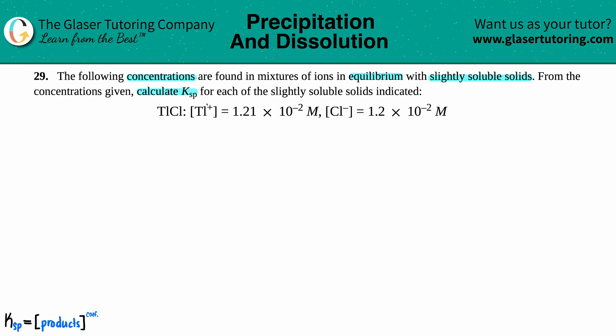They do give us the concentrations of each ion. They say that the Tl+ is 1.21 times 10 to the negative second molarity and the Cl- is 1.2 times 10 to the negative second molarity. From that we have to find the Ksp. Remember, Ksp always comes from a balanced equation, and a balanced equation for the Ksp we're always taking that solid, they did say it was a solid, and breaking it down into its ions.